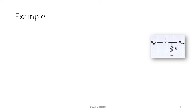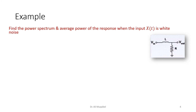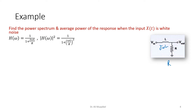Now for a circuit example: we have an input voltage with an inductance L and a resistance R. The question asks to find the power spectral density and average power of the response when the input x is white noise. To work in the frequency domain we find the transfer function. Using circuit analysis, the inductor impedance is jωL, and by voltage divider: H(ω) = R / (jωL + R). Dividing numerator and denominator by R gives a simplified expression, and |H(ω)|² = 1 / (1 + ω²L²/R²).